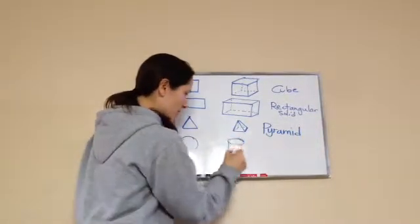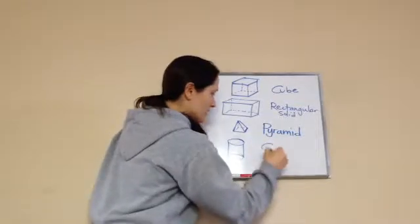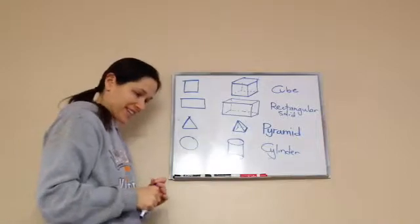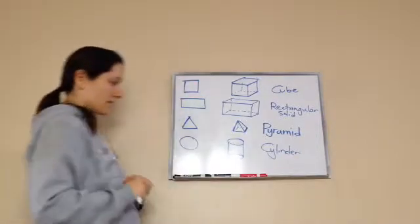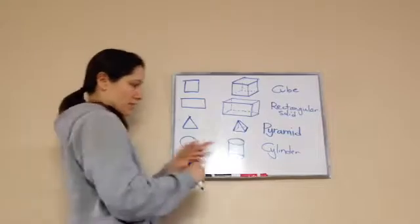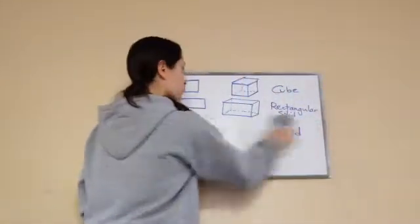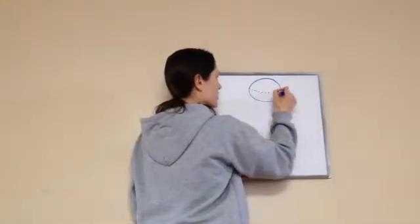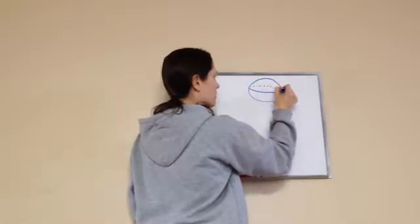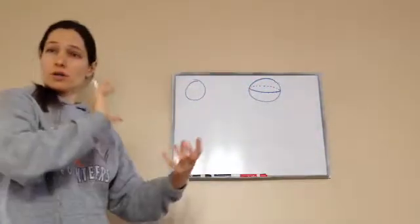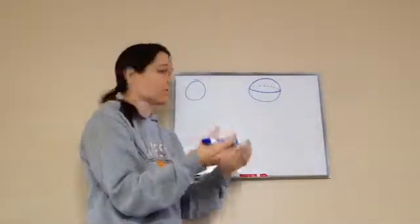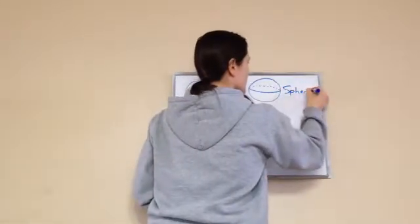This is a circle; this is a cylinder. Now this next one — I'm going to pretend like it's going. It's like a basketball; it's not just a circle flat. It actually makes up space like a basketball. This will be called a sphere.